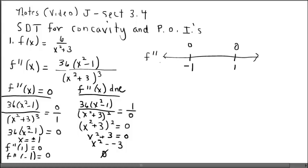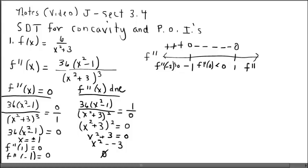Now we should test values. Testing x=−2 in the second derivative: that factor becomes positive times a positive number. Notice the denominator will always be positive no matter what x you substitute, so positive divided by positive gives a positive output — greater than zero. Testing x=0: that gives a negative numerator and positive denominator, so negative. Testing x=2: that also gives a positive output. So the concavity changes at these two locations.